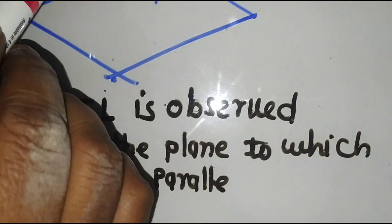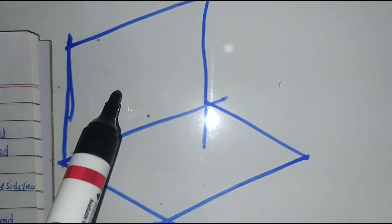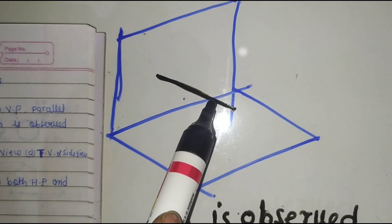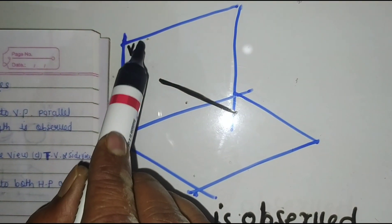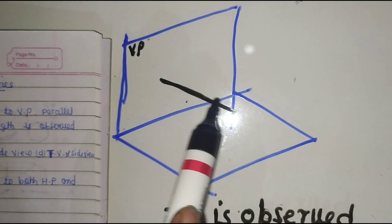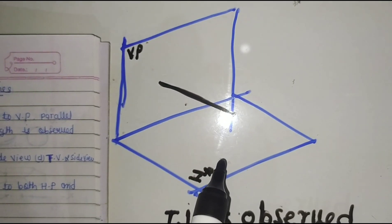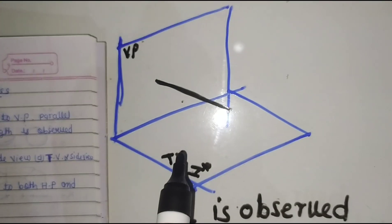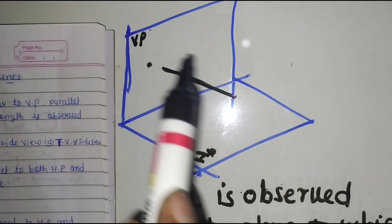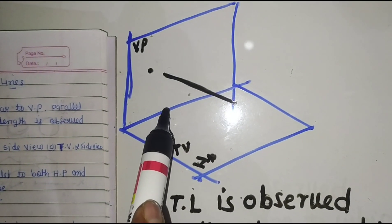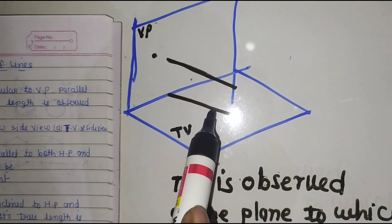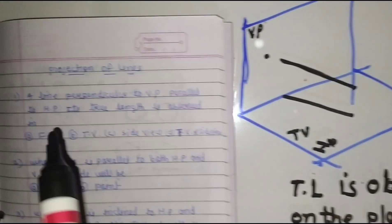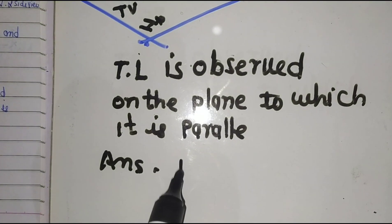Here the line is perpendicular to VP — that is, it is at 90 degrees to VP — and it is parallel to HP, the horizontal plane. The true length is observed on the plane to which the line is parallel. Since it is parallel to HP and we draw the top view on the HP, the true length is observed in the top view. The answer is top view.